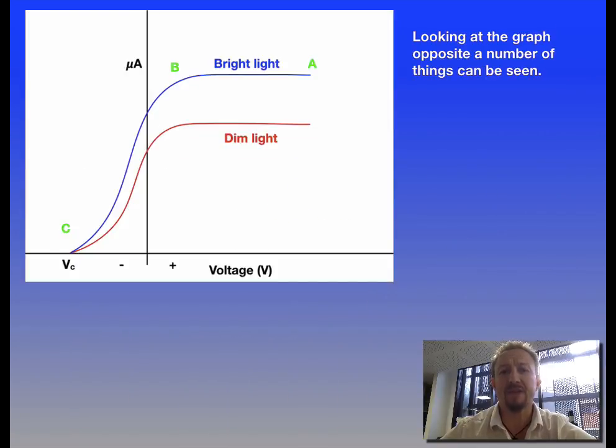So how does this look on a graph? If we look at the graph we've got two lines which are shown, one for bright light and one for dim light. The key thing you need to understand is that both curves are identical in their shape, showing that we've got a specific current and then it drops off and goes to the cutoff voltage.